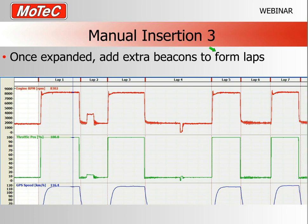In this case we have a series of tests from the jet ski, and inserting manual beacons at the beginning and end of each test has created some laps. Because this isn't a circuit race but simple testing for overlays, lap one is a test, lap two is the turnaround time between tests, lap three is the next test. The customer turned the engine off, made a change, then did two more tests.